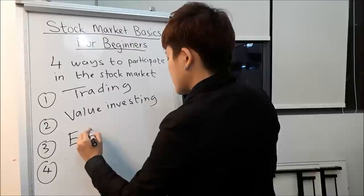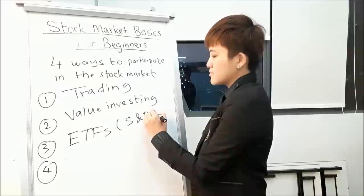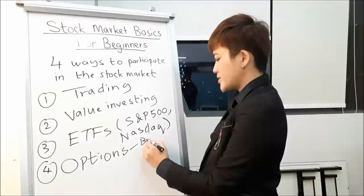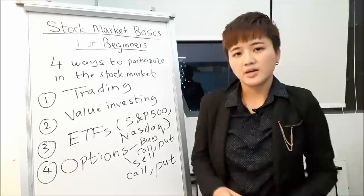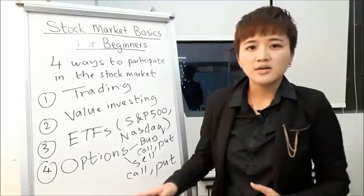The third way to participate in the stock market is through index investing — buying into ETFs, meaning you're buying the market. For example, the S&P 500 or the NASDAQ. The fourth way is options — you can buy a call or a put, or sell a call or a put. Because options are more risky, I wouldn't recommend them for beginner investors. Only when you're more familiar with the stock market and have the right mentor should you go into options.